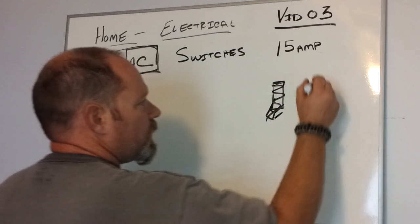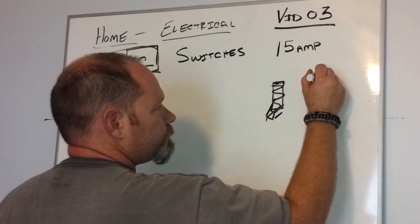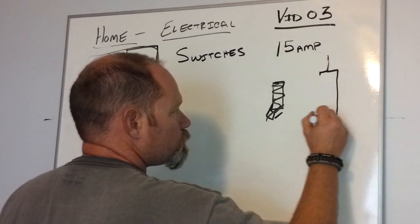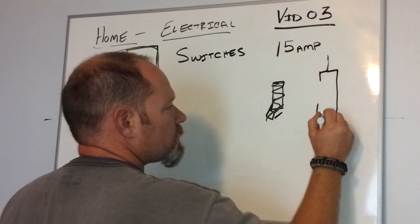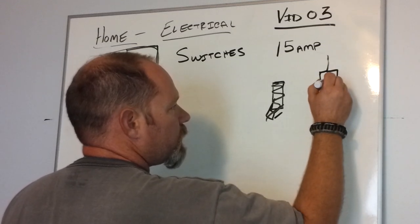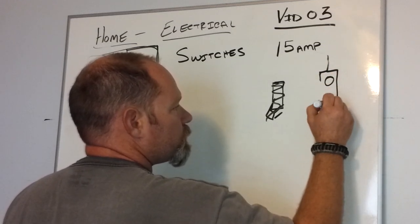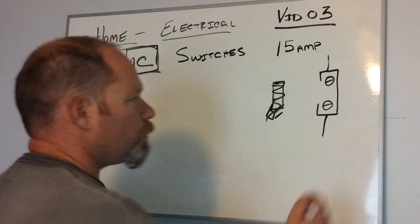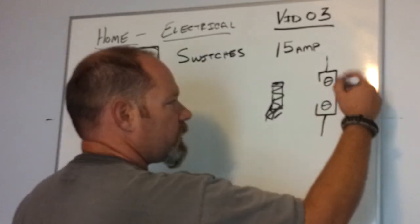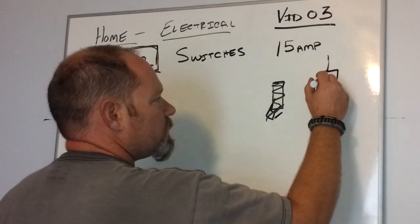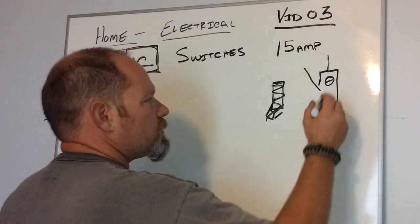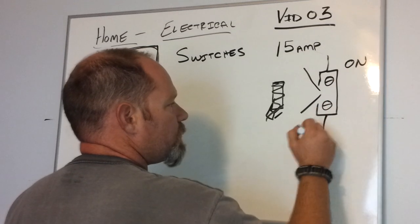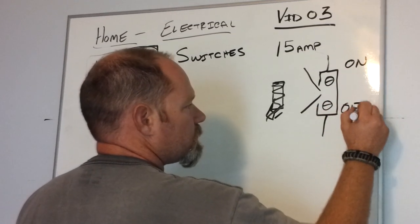So typically, I'm going to draw a side view of a switch. Like the plugs, you're going to have two screws here, and it doesn't matter what the colors are. I think they're brass. When the switch is in the up position, that means it's on. If it's in the down position, that means it's off.